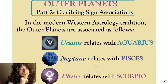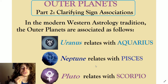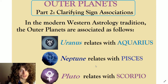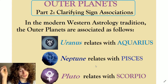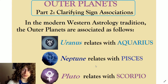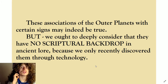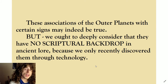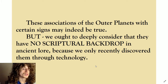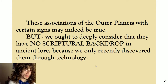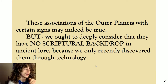This is the gist of what our class is about today. In the modern Western astrology tradition, the outer planets are associated as Uranus relating with Aquarius, Neptune relating with Pisces, and Pluto relating with Scorpio. These associations may be true, but we ought to deeply consider that they have no scriptural backdrop in ancient lore, because we only recently discovered these planets through technology. I will submit that it's possible the Greeks gave reference, through their metaphysical intuition, to the outer planets. I think Aquarius might relate to one of the gods.